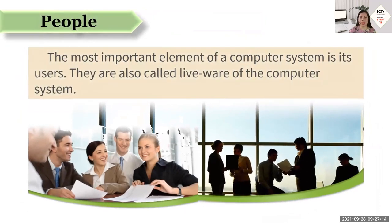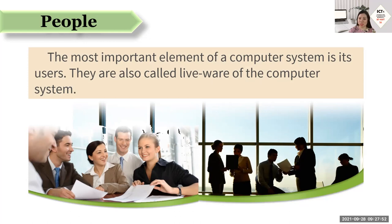The third element — people — is the most important element of a computer system, because without us, the users, the hardware and the software can never be useful. We are the ones putting the very purpose of the computer into reality. They are what we call the liveware of the computer system — we, the people who are operating the machine and using or enjoying the benefits of this technology.